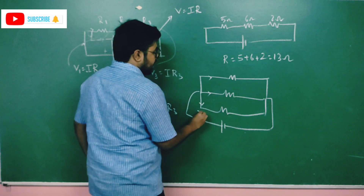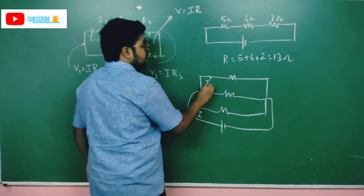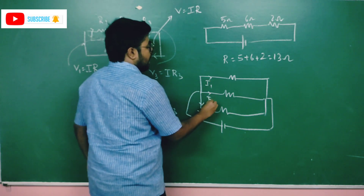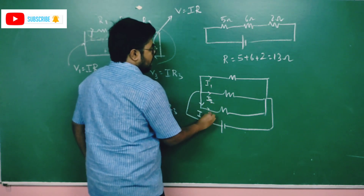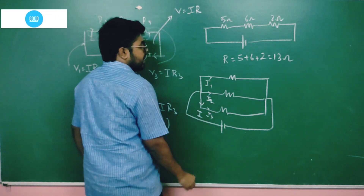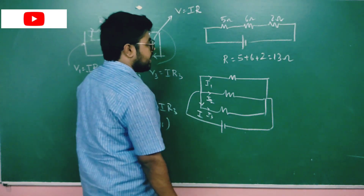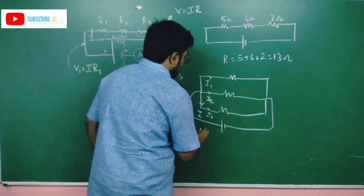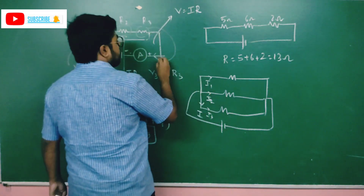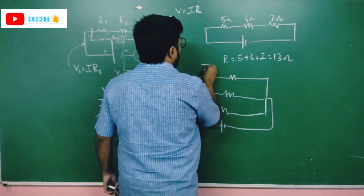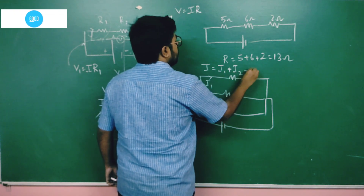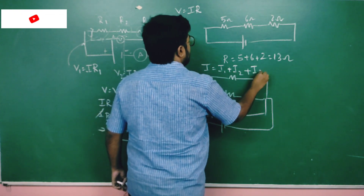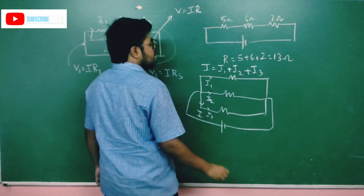In a parallel connection, the current will split. When it comes in, it divides into i1, then i2, then i3. So I can write the equation: i equals i1 plus i2 plus i3.